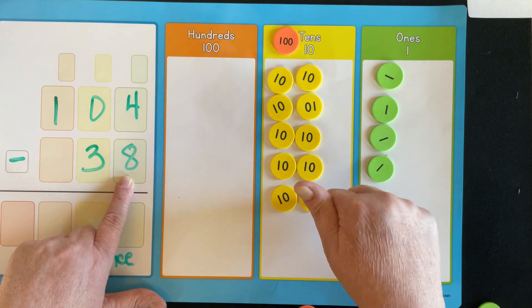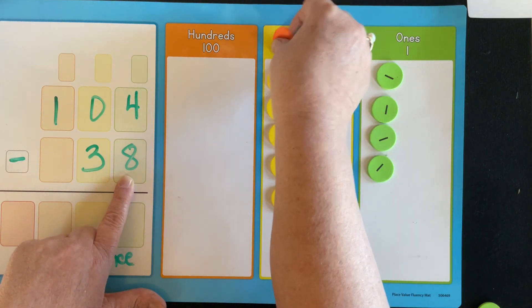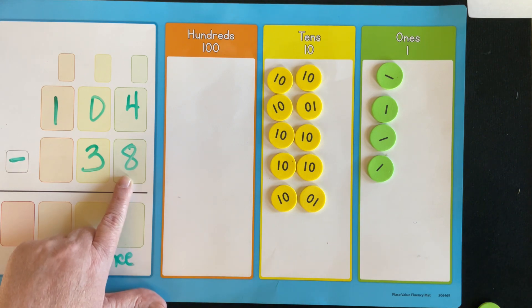So let's make sure this makes 100. 10, 20, 30, 40, 50, 60, 70, 80, 90, 100, or 10 tens. So I'm going to take this one away now because I traded.